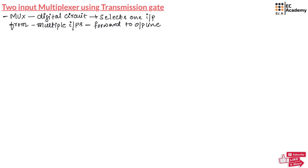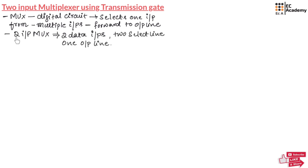In this lecture, we will focus on two input multiplexer, which means it is having two data inputs and two select lines to select these inputs, and it will be having one output line. So two input multiplexer consists of two input lines to choose the input data, two select lines to choose between these two input data, and one output line.